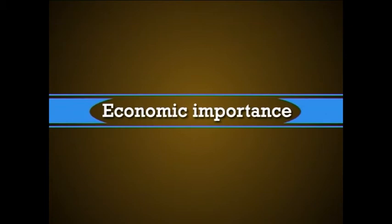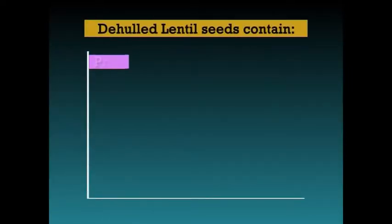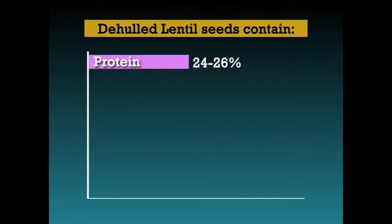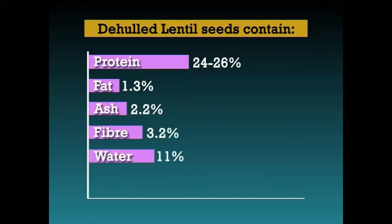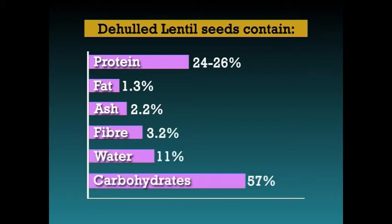Lentil is mostly consumed as dal in India and is good for patients too. The dry leaves and stems, empty pods and broken seeds are used as cattle feed. The dried lentil seeds contain about 24 to 26% protein, 1.3% fat, 2.2% ash, 3.2% fiber, 11% water and 57% carbohydrates.